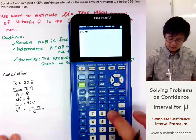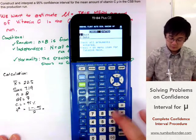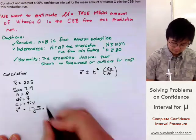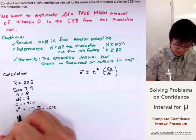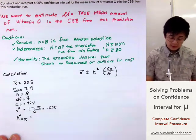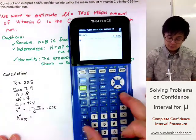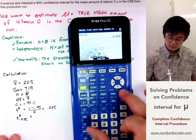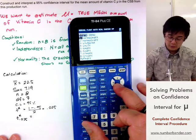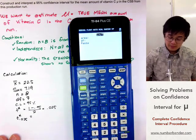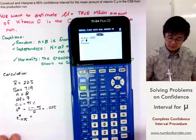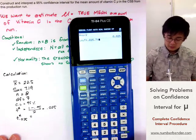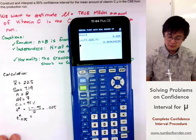Using our calculator, 1 minus 0.95 divided by 2, which is 0.025. So we're going to find our t-star at 0.025. Go to vars, second function vars for distribution, and go to inverse T with an area of 0.025 and degrees of freedom of 7, which is going to give us 2.365.